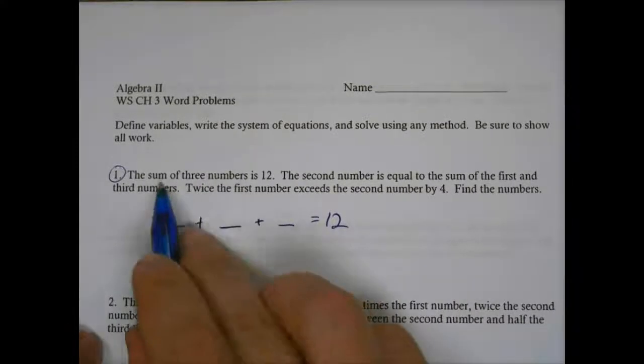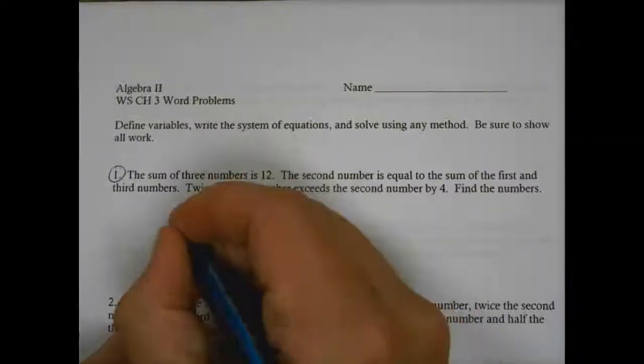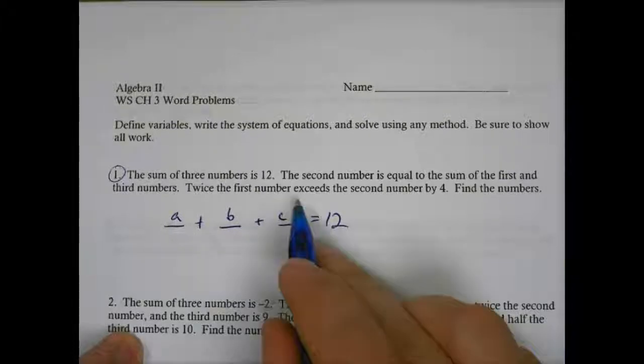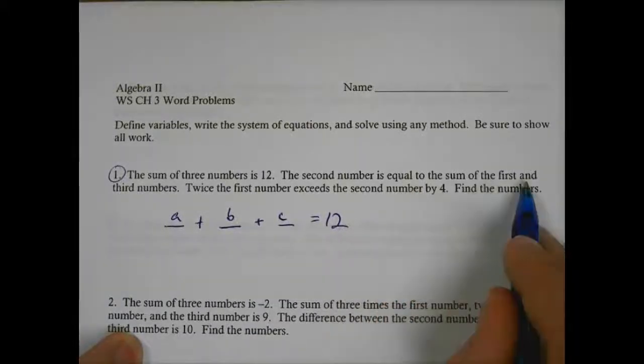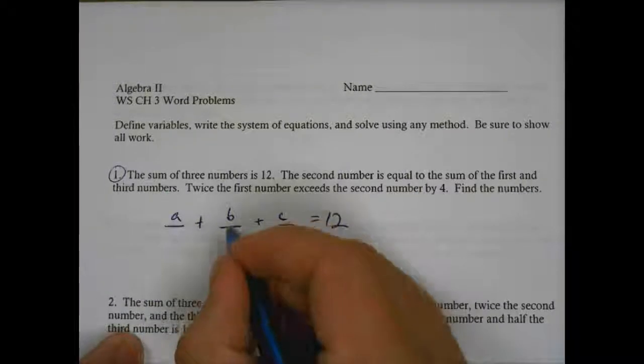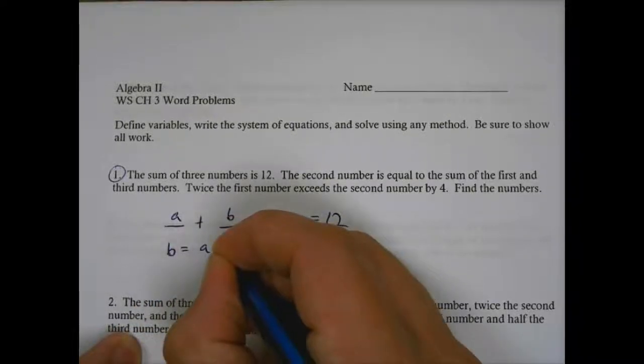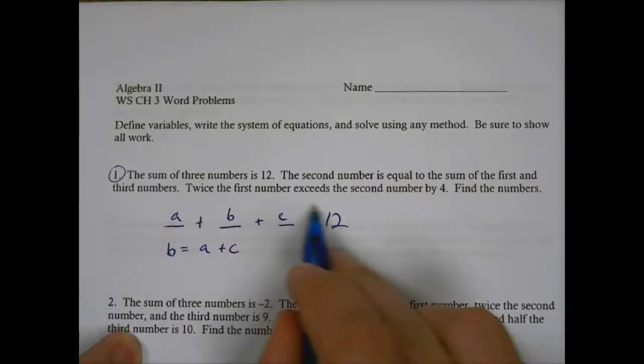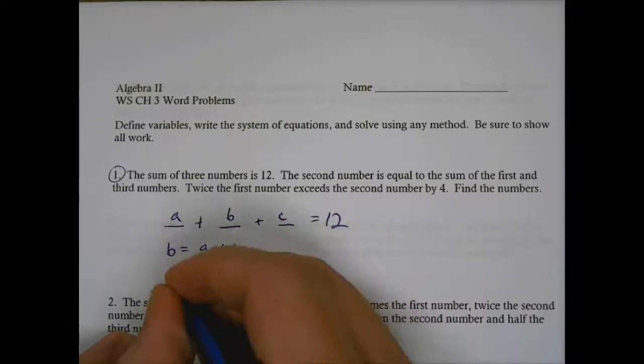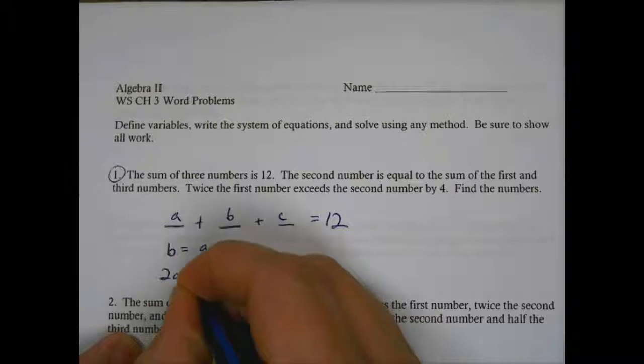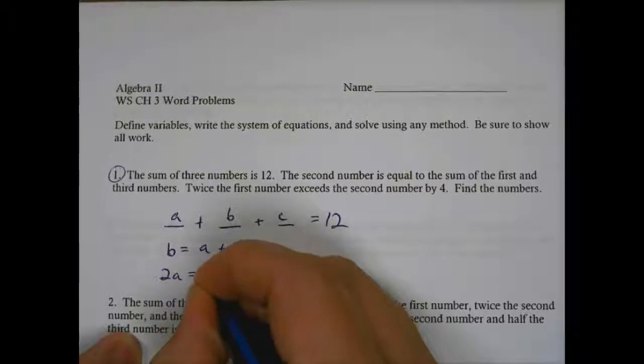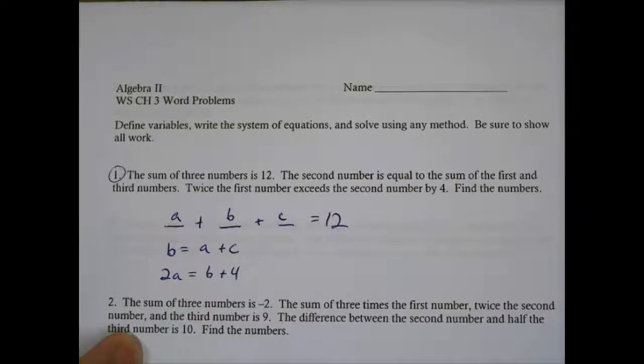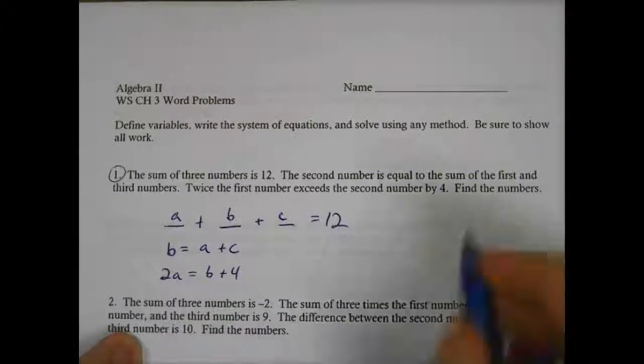So for this first one, it says the sum of three numbers is 12. So A plus B plus C equals 12. The second number is equal to the sum of the first and third, so B is equal to the sum of the first and the third. Twice the first number exceeds the second number by four. So if I double the first number, that is only four more than the second number.